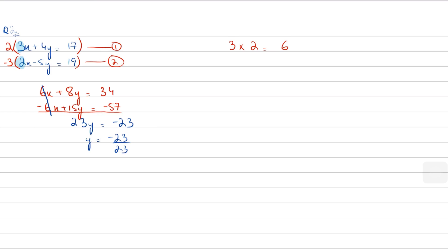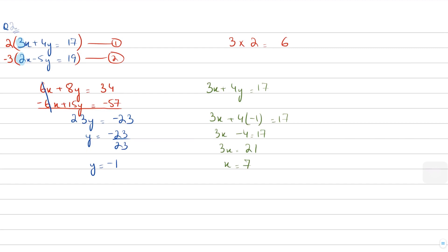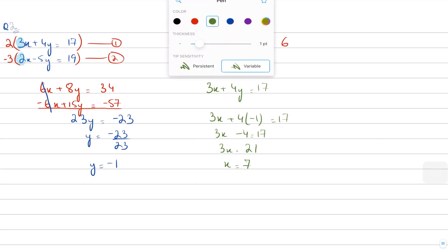34 minus 57 equals minus 23, so we have 23y equals minus 23, meaning y equals minus 23 over 23, which gives y equals negative 1. Now we still have to find the value of x, so let's use the first equation: 3x plus 4y equals 17. Plugging in y equals minus 1: 3x minus 4 equals 17, so 3x equals 21, and x equals 21 over 3 which is 7.